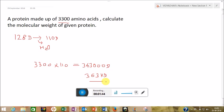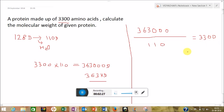So this is the answer. Let's reverse the question. If the question is a protein of molecular weight 363,000, what will be the number of amino acids? So just divide it by 110, you will get the answer. So after dividing this, you will get 3,300.